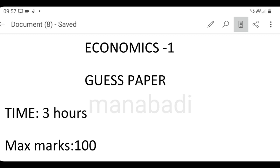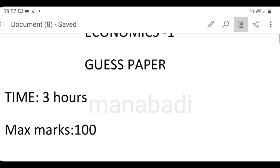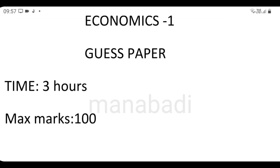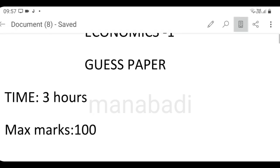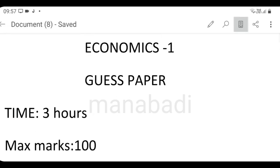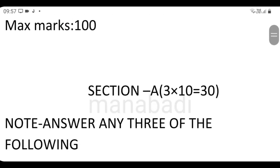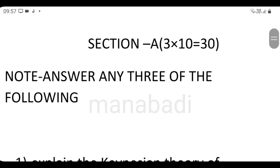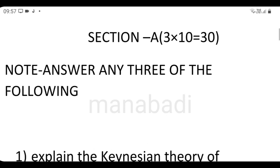So economics, this paper is 3 hours time and marks are 100 marks maximum. Pass marks are 35 marks. I have three sections: Section A, Section B, Section C. First section is longs, section B shorts, and section C very short.